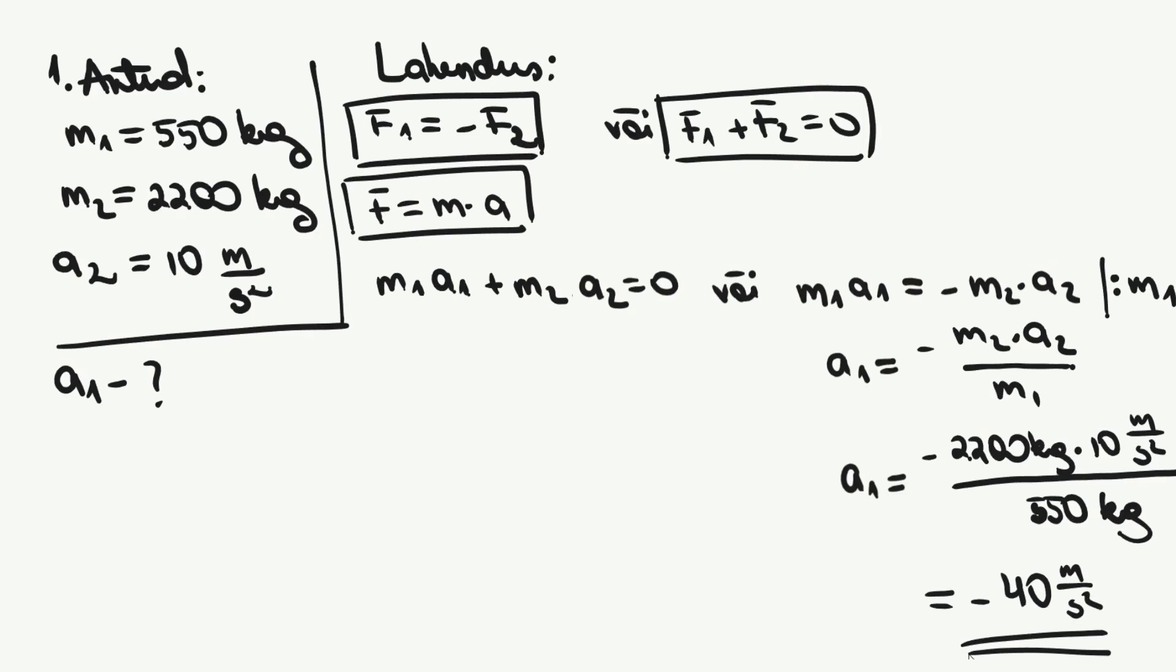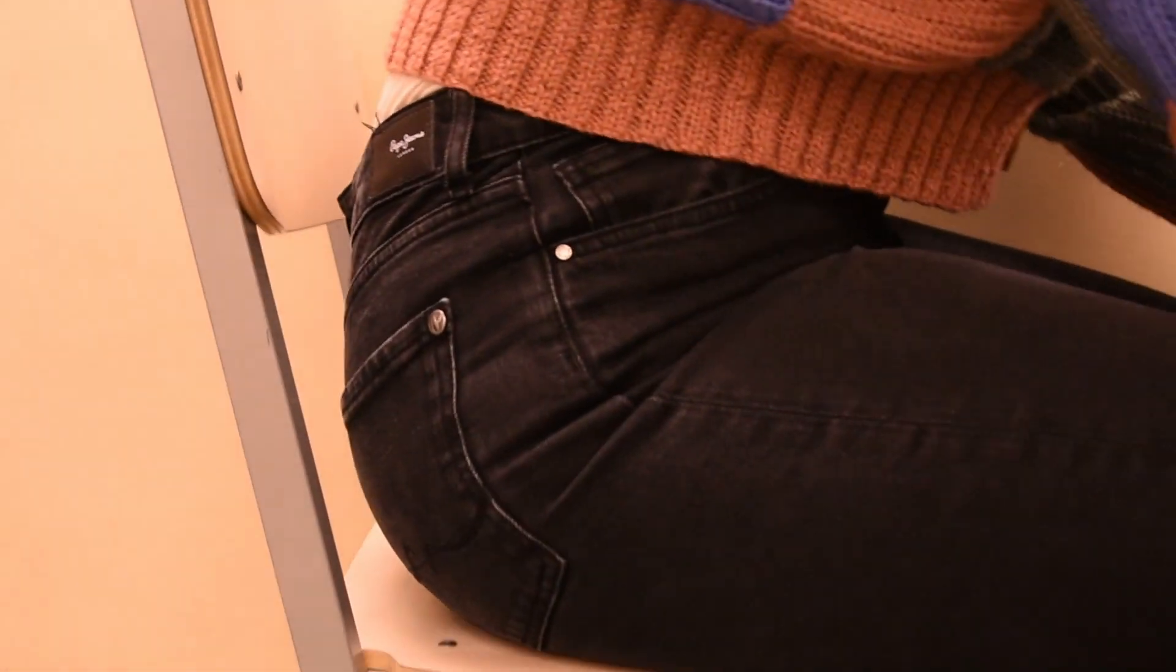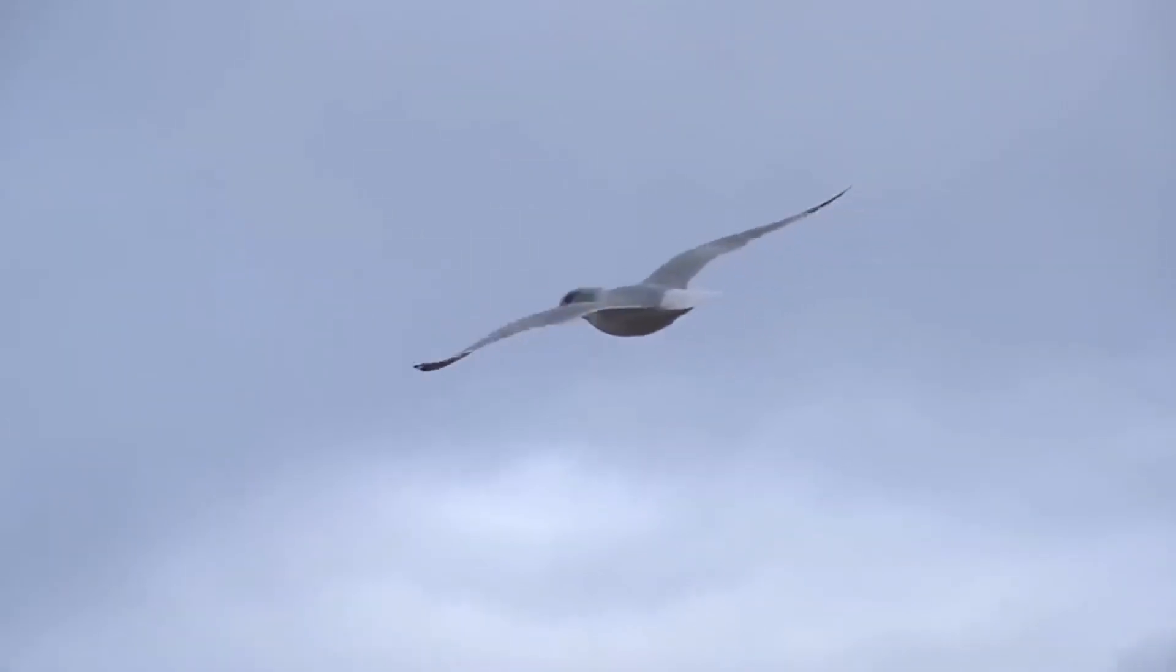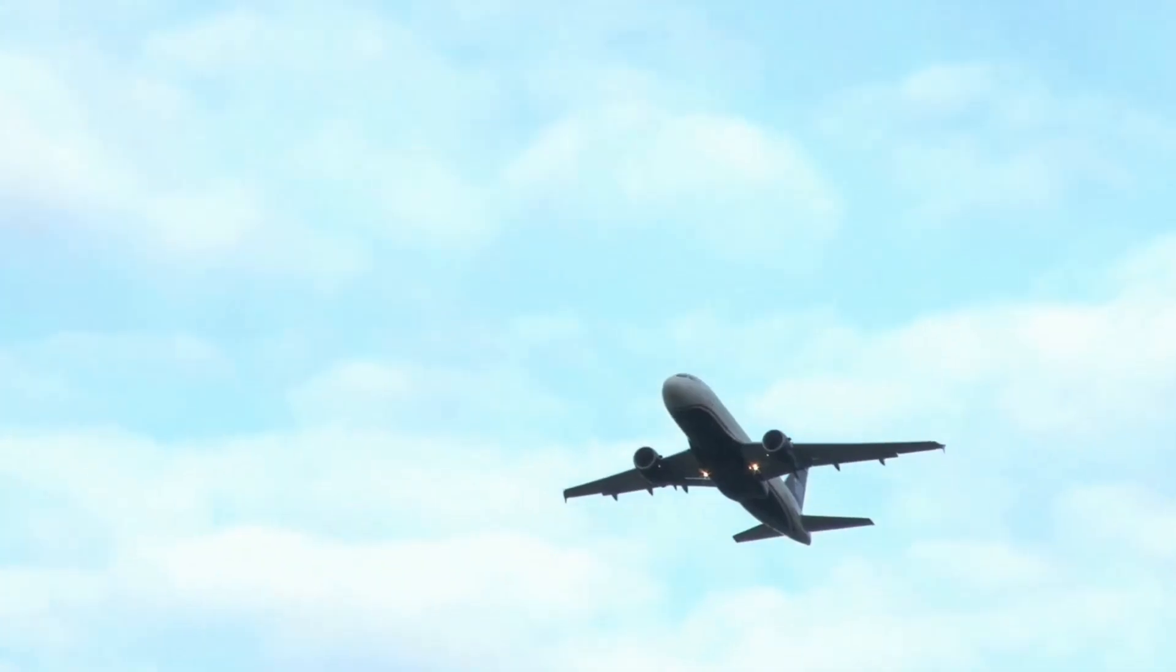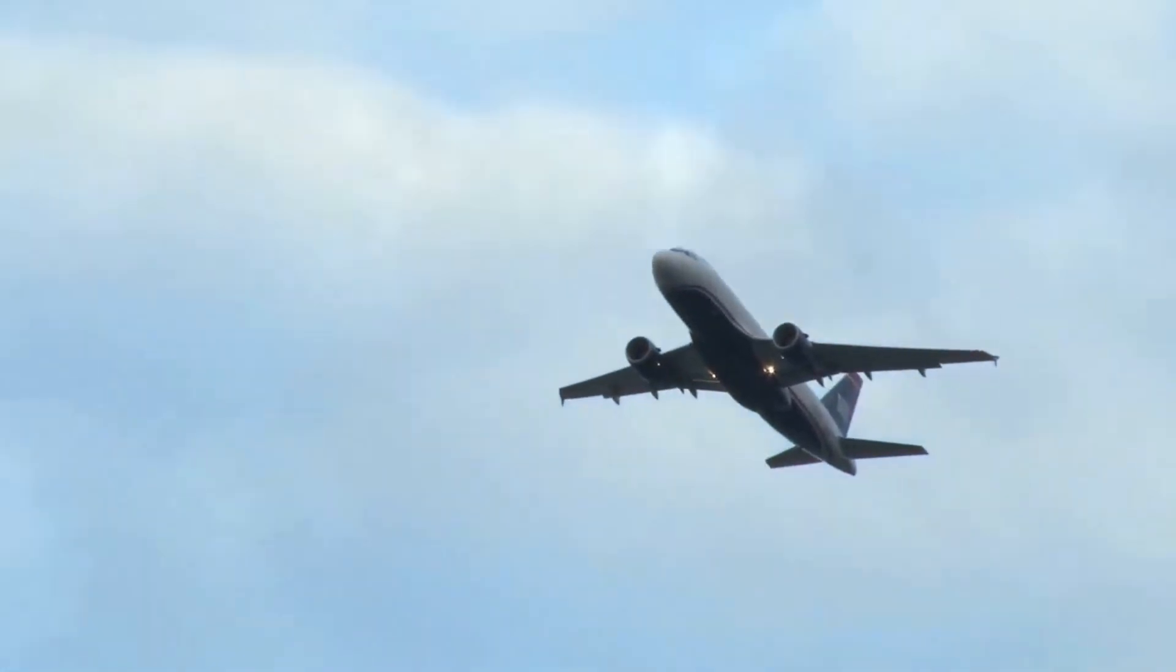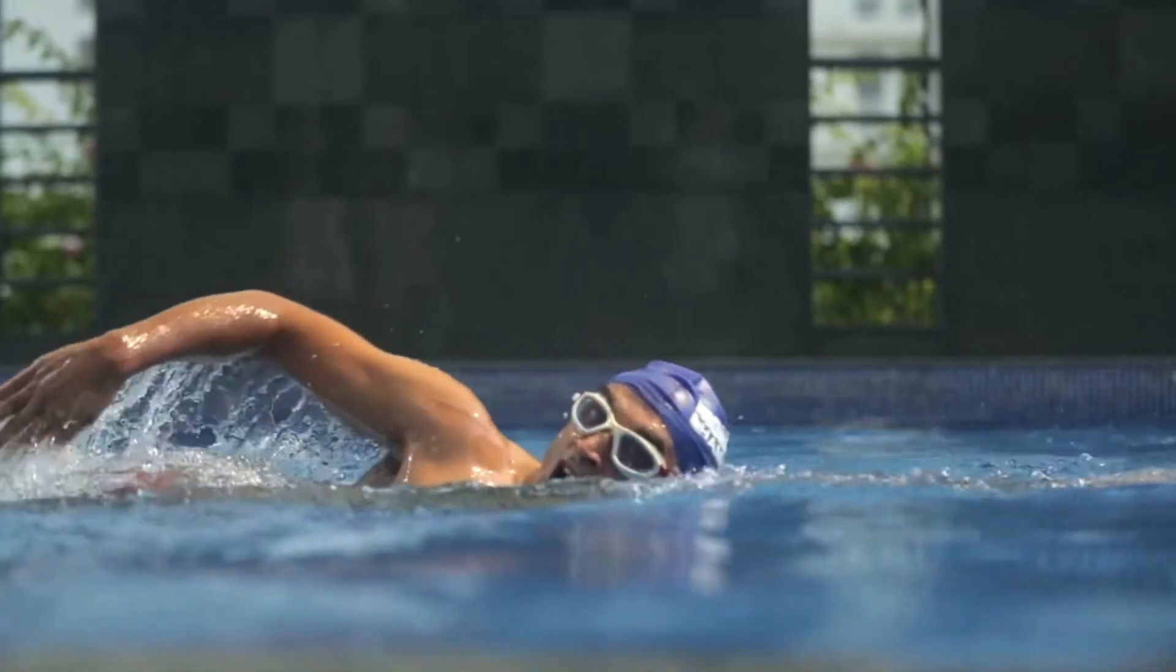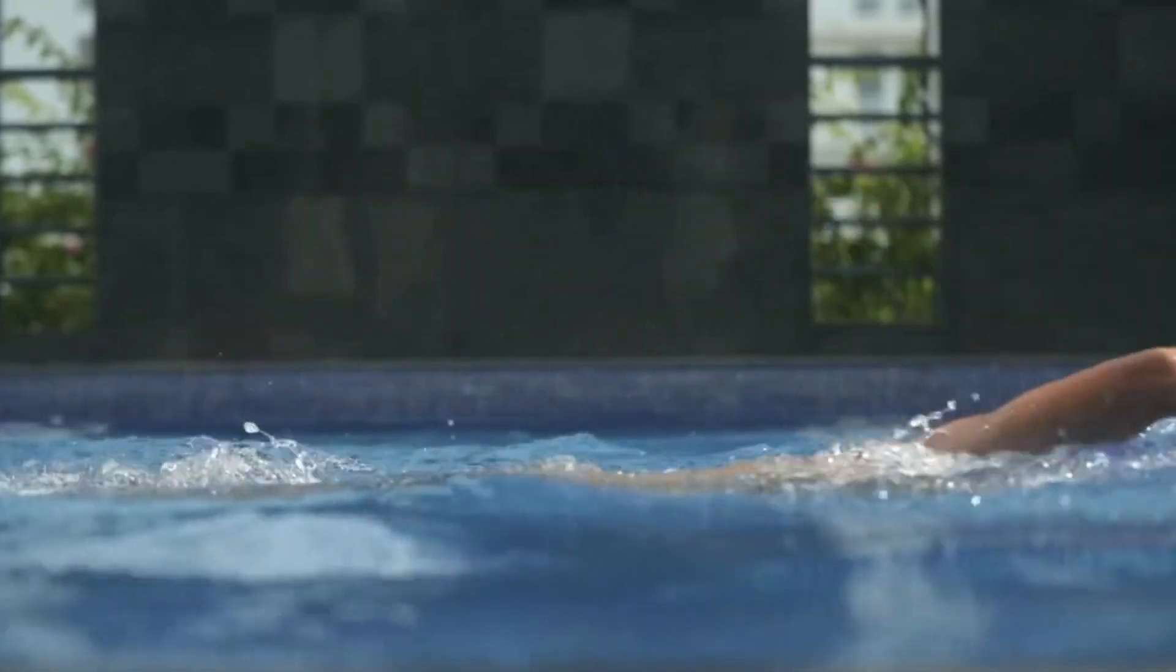Newtoni kolmanda seaduse rakendumist näeb ka väljaspool arvutusülesandeid. Pole vaja vaadata kaugemale kui tool millel istud. Kui toolile istuda, siis mõjub toolile allapoole suunatud raskusjõud. Samuti surub tool ülespoole suunatud jõuga tagasi. Vastasel juhul vajuks tool kokku. Linnu tiivad suruvad õhku alla, tekitades ülespoole suunatud jõu, mis aitab neil edasi liikuda. Sama tehnikat kasutavad ka lennukid ja helikopterid. Ujudes lükatakse vett tahapoole. Tekib võrdne ja vastassuunaline jõud, mis põhjustab edasi liikumist.